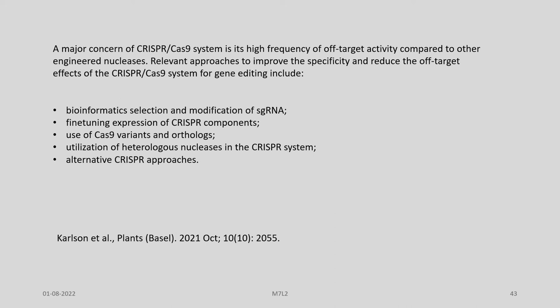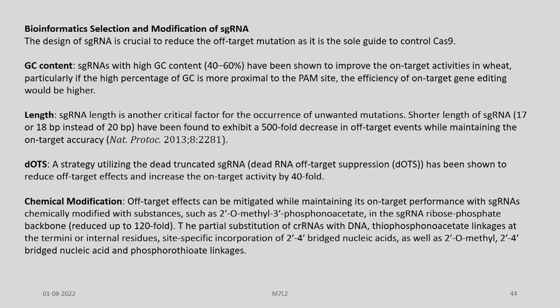A major concern of the CRISPR-Cas9 system is its high frequency of off-target activity compared to other engineered nucleases. Many relevant approaches to improve specificity and reduce off-target effects have been developed, such as bioinformatics selection and modification of single guide RNA, fine-tuning expression of CRISPR-Cas9 components, use of CRISPR-Cas9 variants and orthologues, utilization of heterologous nucleases in the CRISPR system, and alternative CRISPR approaches.